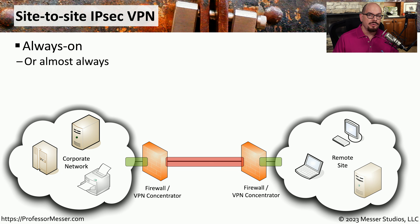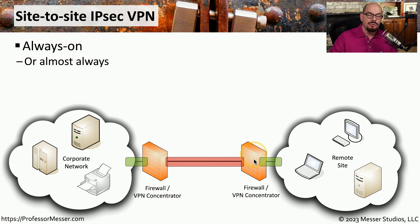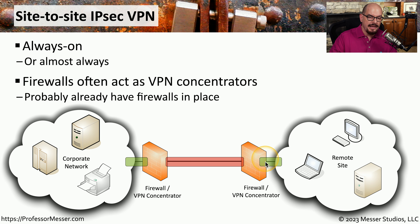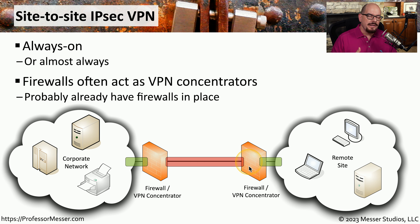Some organizations build an encrypted tunnel between remote locations, so everyone at a remote site can communicate back to the corporate network over an encrypted channel provided automatically through firewalls acting as VPN concentrators. In this scenario, it's the firewalls that act as the VPN endpoints, so you don't need any additional software or configuration on devices on either side — you simply send traffic normally and the encryption process occurs automatically in between. SSL VPNs are often referred to as remote access VPNs, and these IPsec VPNs are referred to as site-to-site VPNs.